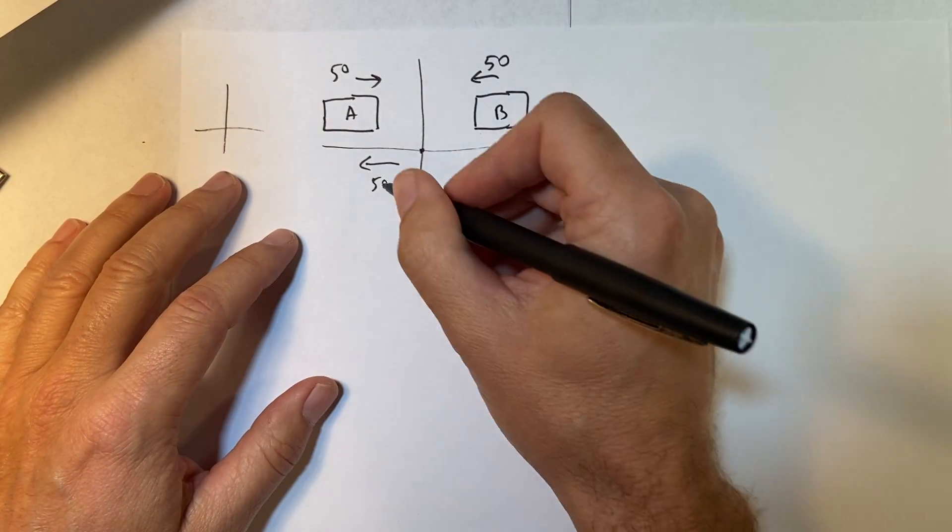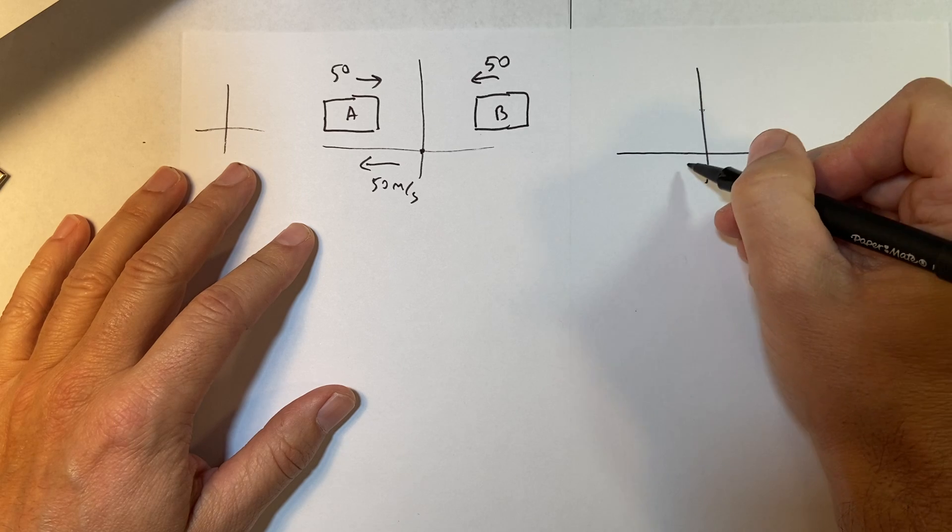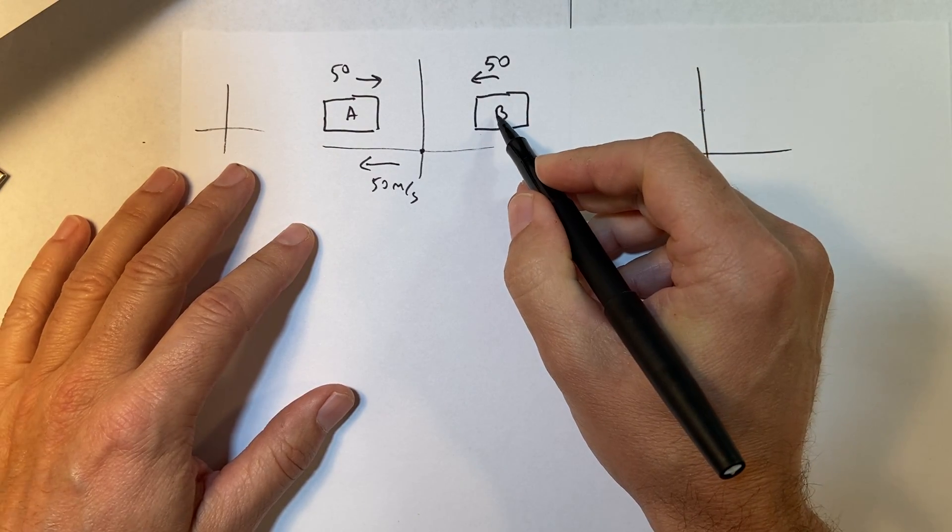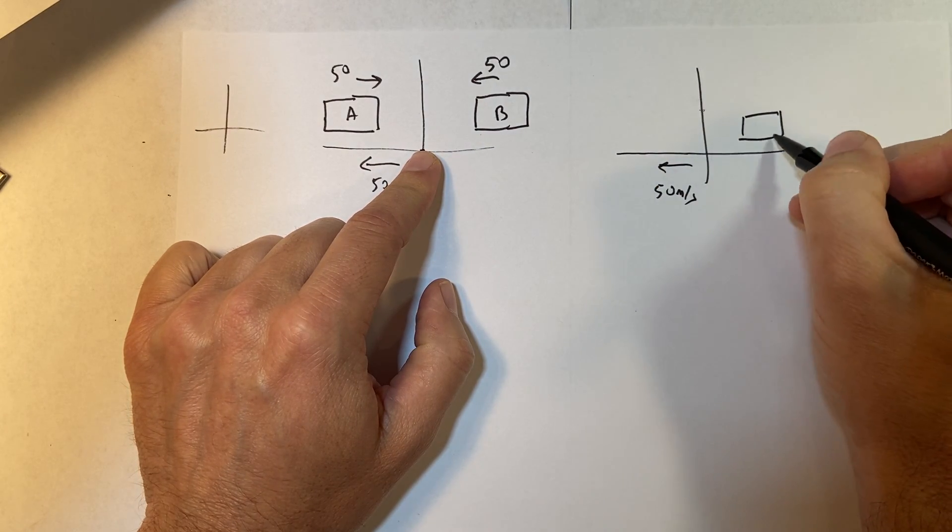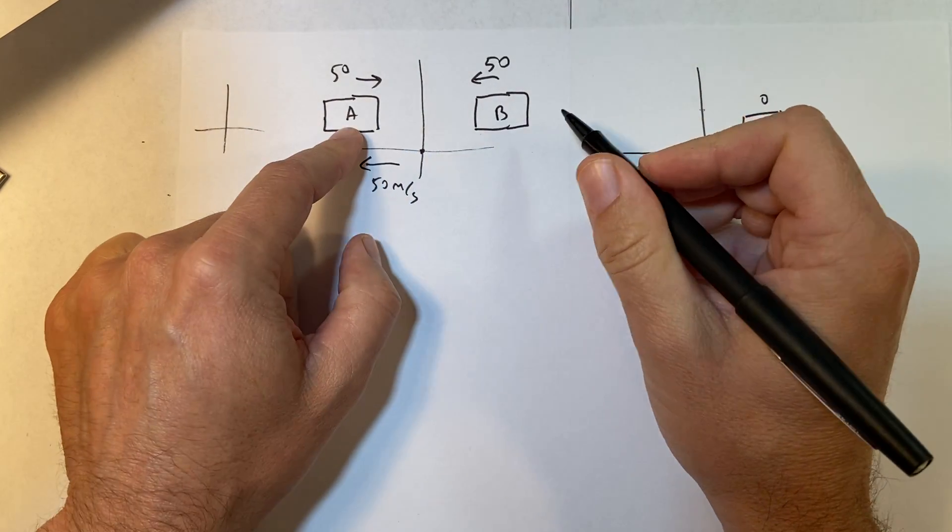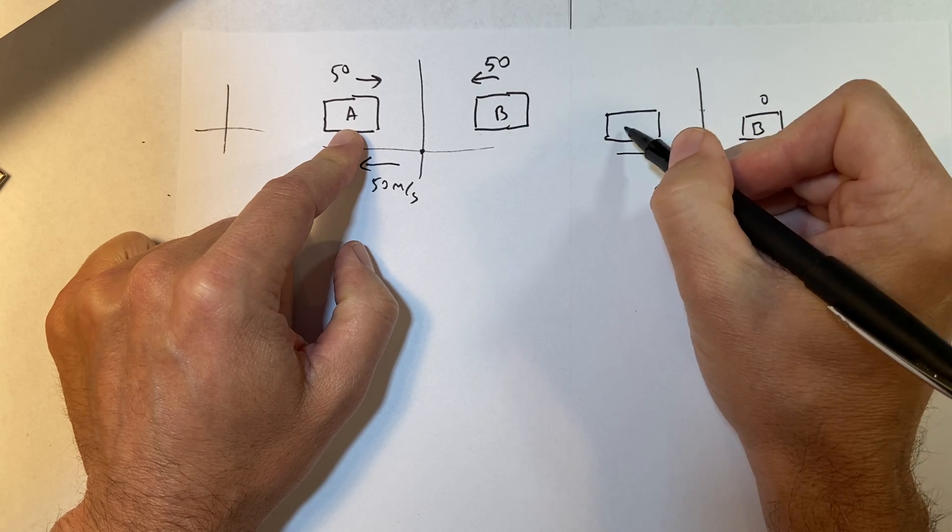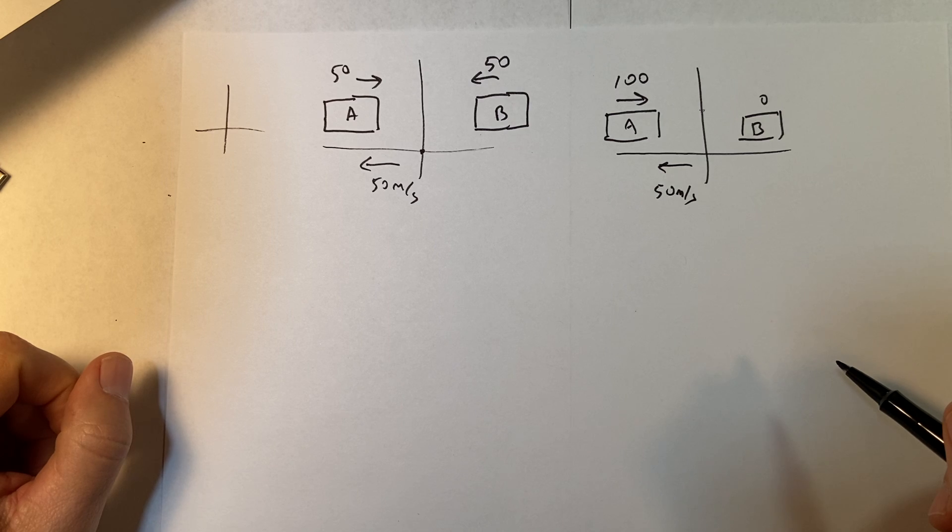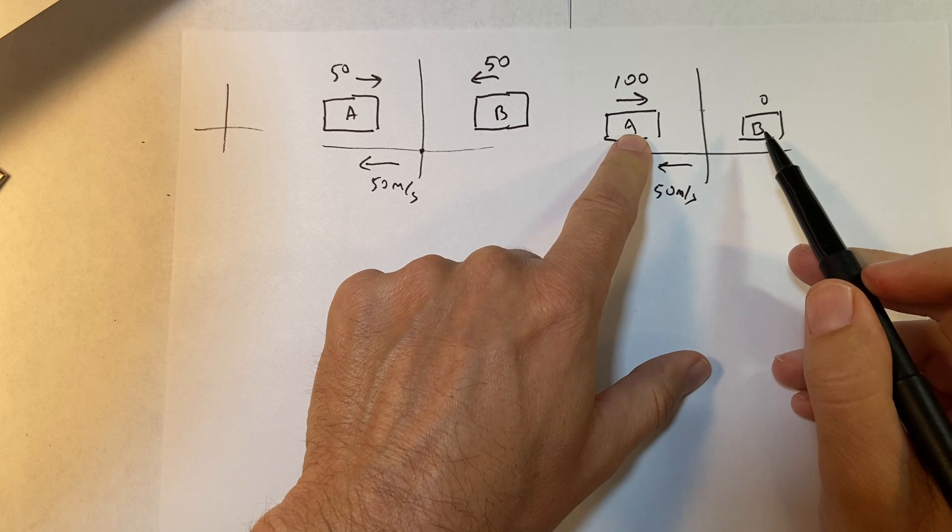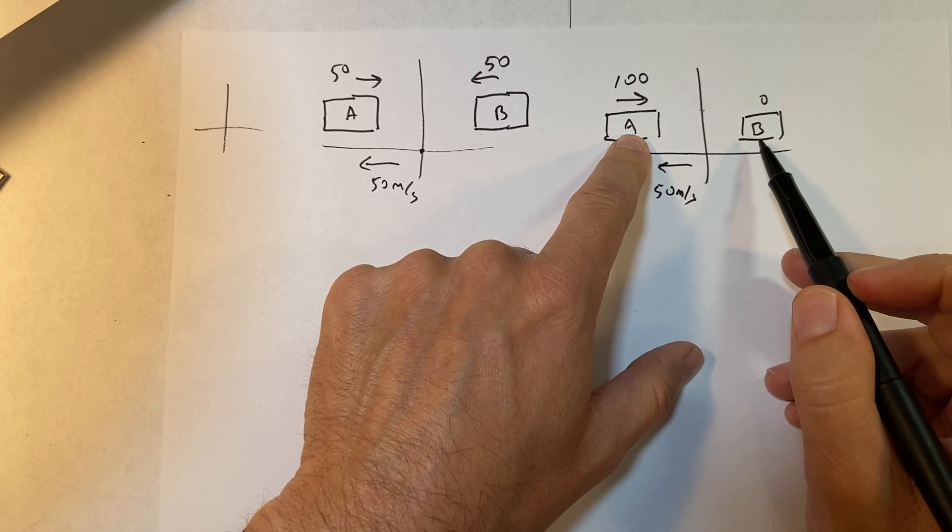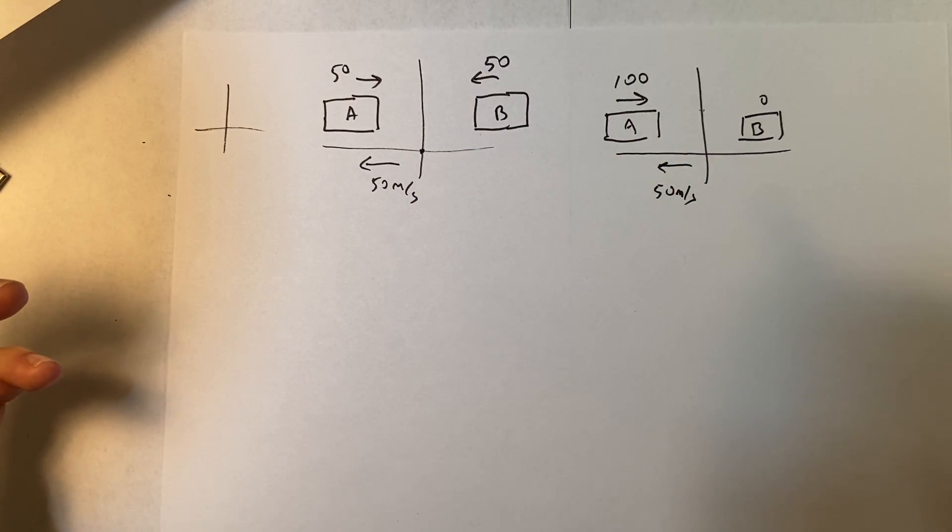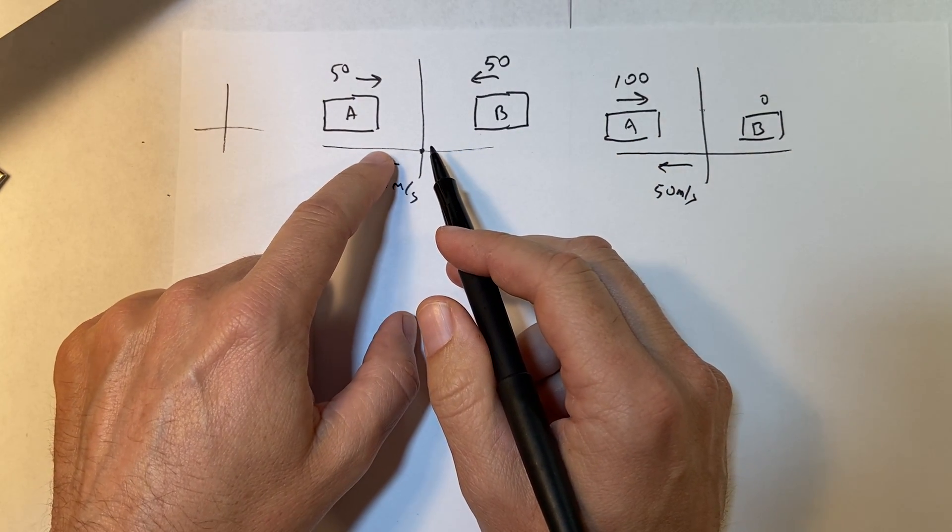So what if I have this coordinate system, but my coordinate system is moving this way at 50 meters per second. And this is what we call relativity, because the motion of these things should be independent of the velocity of the frame up to a point. If you start getting near the speed of light, things don't work. But this is low speed relativity. So in that case, if I have this, here's my new coordinate system. It's moving to the right at 50 meters per second. Then this car, according to that coordinate system, is just sitting there. And this car is moving this way at 100 meters per second.